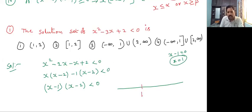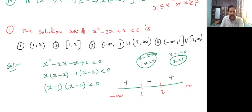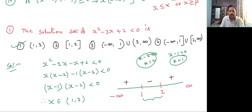Mark one on the number line. X minus 2 equals zero means x equals two. Mark two on the number line. This is minus infinite, plus infinite. By using wavy curve method, starts with positive, negative, positive. Here less than zero — that means negative. So the value lies between one and two. Answer: x belongs to open interval (1, 2). So first option is correct.